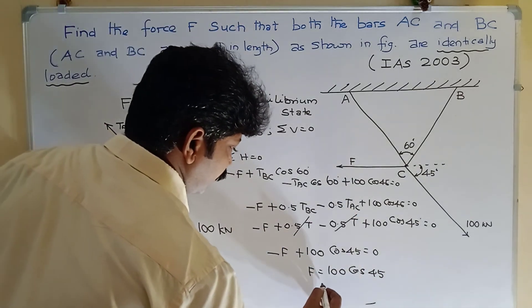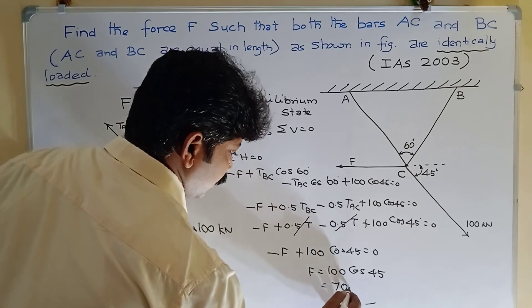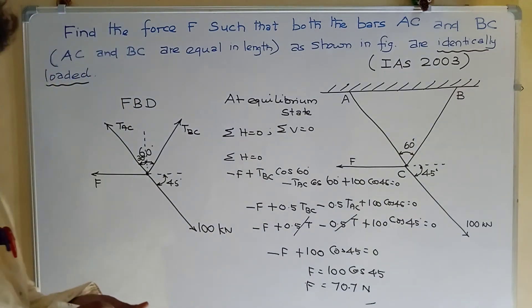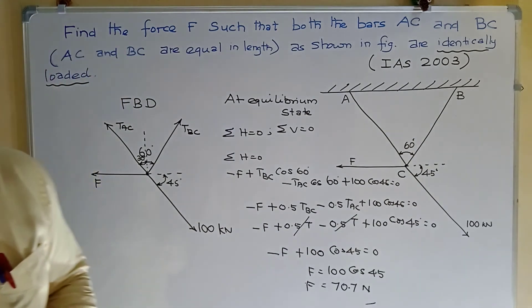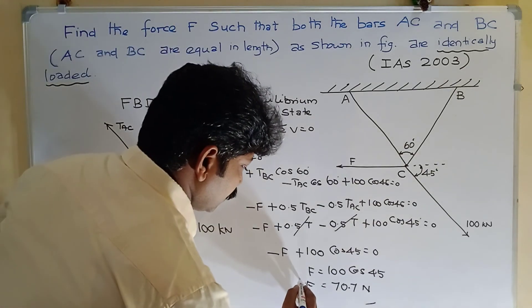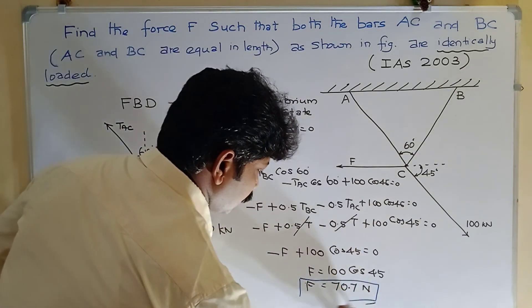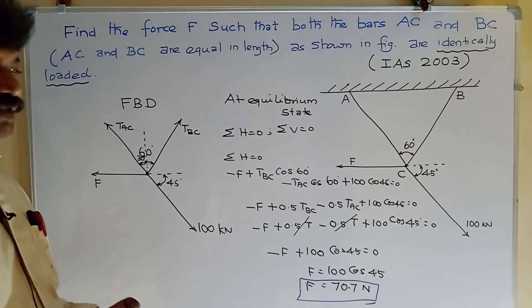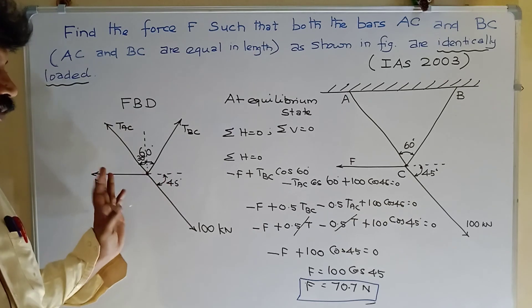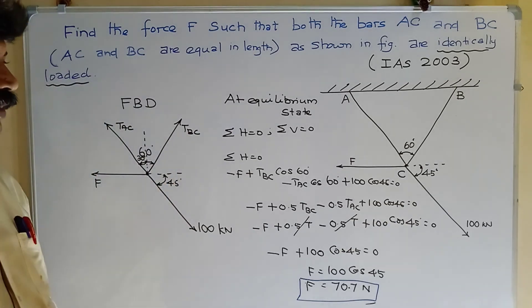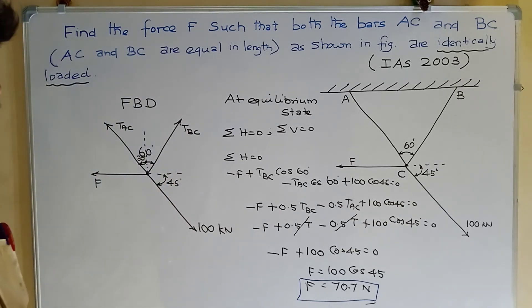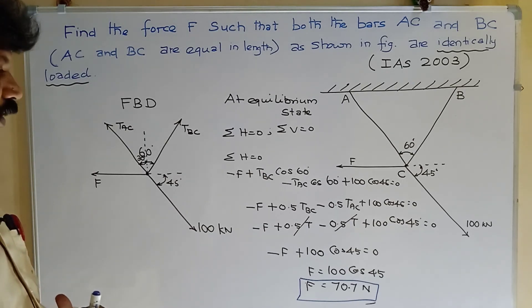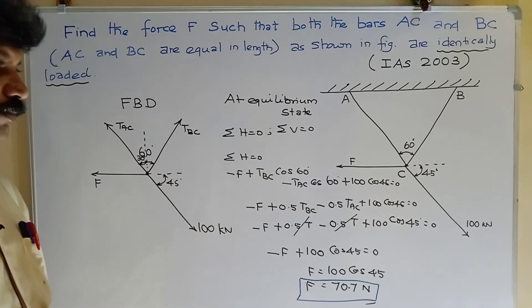100 cos 45 equals 70.7 N, so F equals 70.7 N. To summarize: first draw the free body diagram and represent all the forces, then apply the equilibrium condition sigma H equals 0, and find the value F equal to 70.7 N.